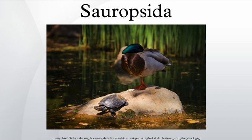Goodrich supported this division by the nature of the hearts and blood vessels in each group, and other features such as the structure of the forebrain. According to Goodrich, both lineages evolved from an earlier stem group, the Protosauria, which included some Paleozoic amphibians as well as early reptiles predating the sauropsid-synapsid split.